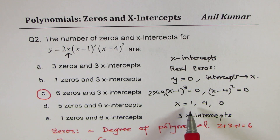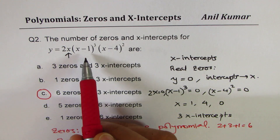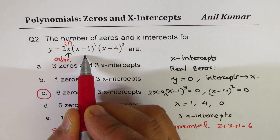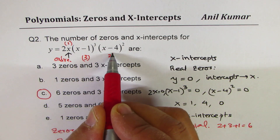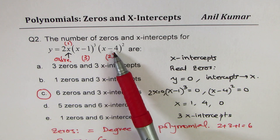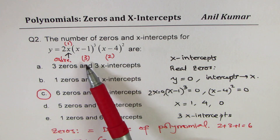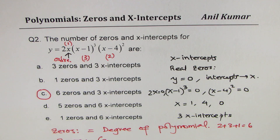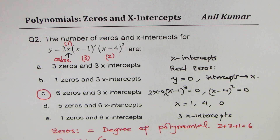At each x-intercept the order tells us the graph behavior: at x = 0 the order is one so the graph behaves like a linear function; at x = 1 the order is three so it goes through like a flattened S; at x = 4 the order is two so the graph turns like a parabola vertex. This is how zeros provide additional information about the behavior of the function near the x-intercepts.